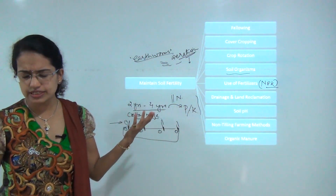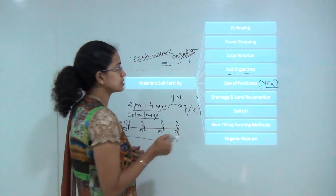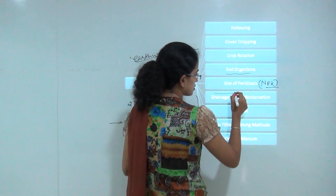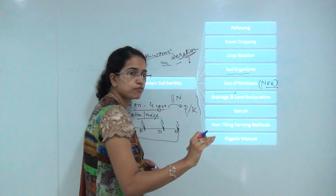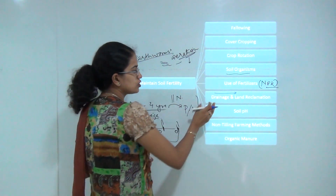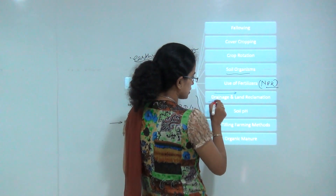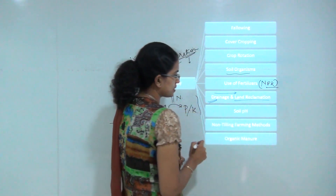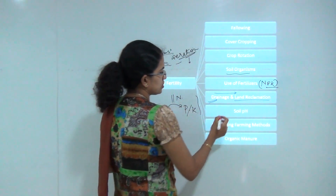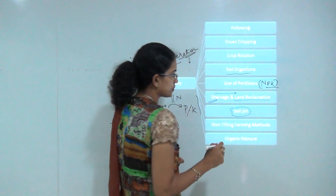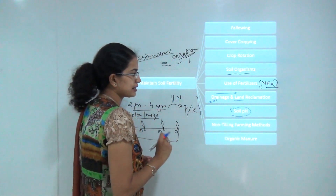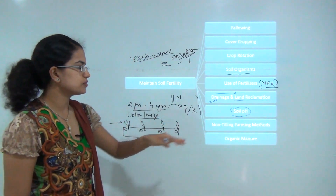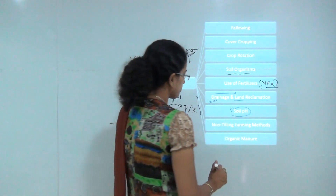If soil is excessively drained, the topmost fertile layer gets washed off, so proper drainage facilities should be maintained in farms, which helps in land reclamation. Soil pH is also important: if there are a lot of pollutants in the soil, it can convert the soil to either an acidic or basic form, so a balanced soil pH needs to be maintained.